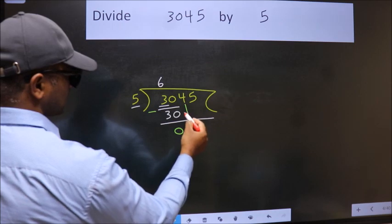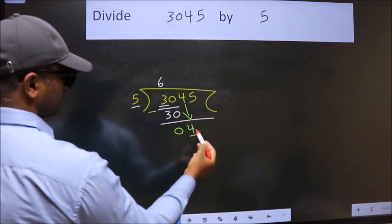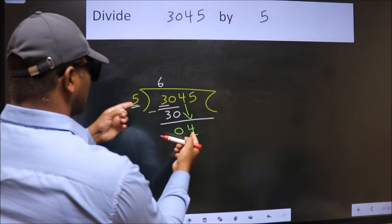After this, bring down the beside number. So, 4 down. Now here we have 4. Here 5. 4 is smaller than 5.